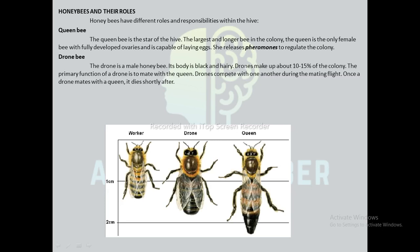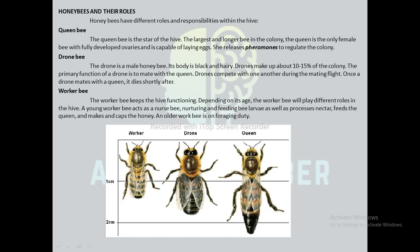Next is the drone bee. The drone is a male honeybee and its body is black and hairy. Drones make up about 10 to 15 percent of the colony. The primary function of a drone is to mate with the queen. Drones compete with one another during the mating flight. Once a drone bee mates with a queen, it dies shortly after.